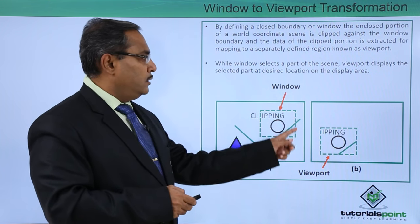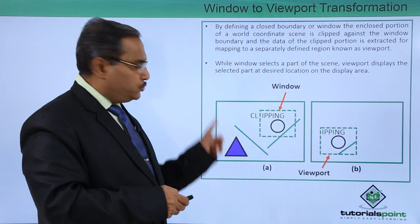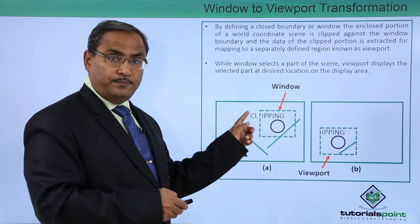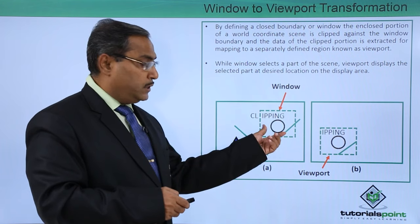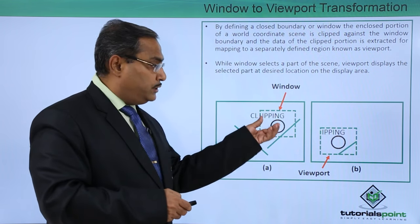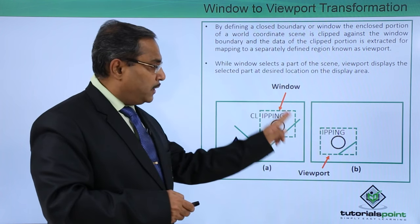Here we are having one world coordinate scene, so many objects are there, here we are defining one window. That portion of the objects which are falling in this window boundary will remain in the window and rest part will be clipped.